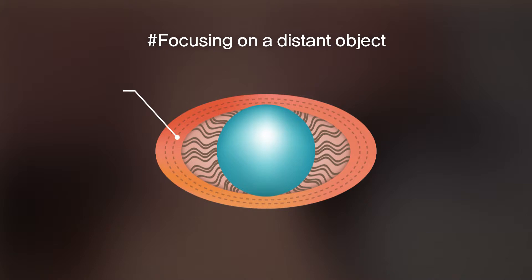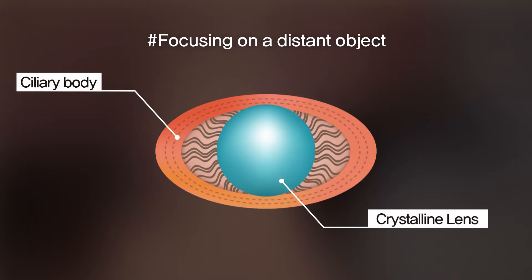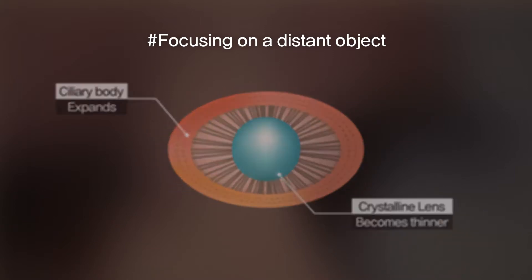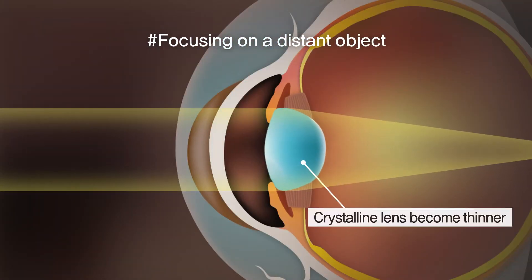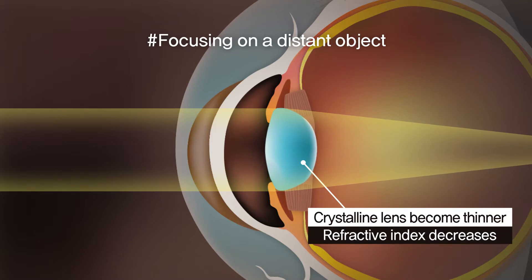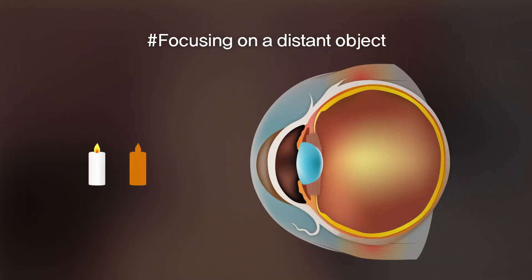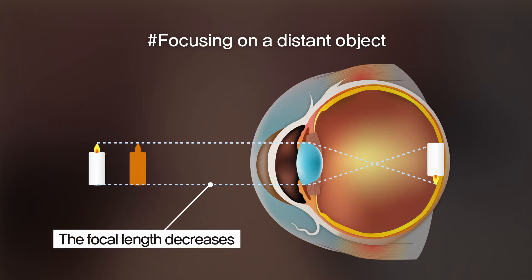On the contrary, when focusing on a distant object, the ciliary body expands and the crystalline lens becomes thinner. When the crystalline lens becomes thinner, the refractive index decreases. Then the focal length increases, making the distant object to be formed clearly in the retina.